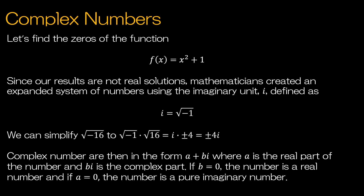Complex numbers. We'll begin with an illustration. If I wanted to find the zeros of the function f of x equals x squared plus 1, I would set the function equal to 0, subtract 1 from each side, and then take the square root. So I would get that x equals plus or minus the square root of negative 1. The square root of negative 1 isn't a real number, and so mathematicians created a whole expanded system of numbers using what they call the imaginary unit, i. And i is defined as the square root of negative 1.